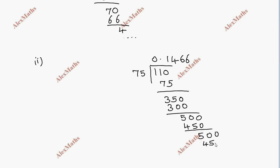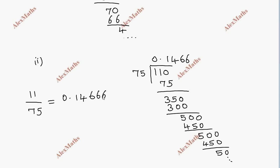So we have 0.1466, 66 repeating. If we use 0.14666, we use a bar. The bar represents the repeating portion.